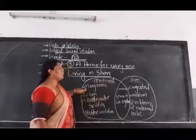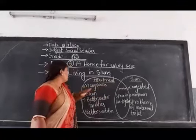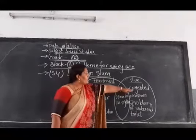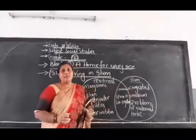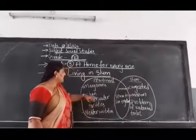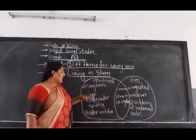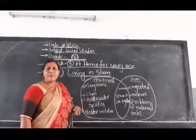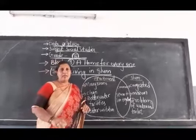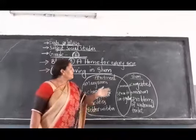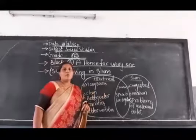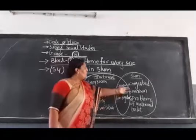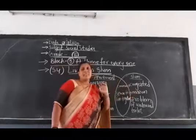Let us read now. First point: many rooms are there in apartments. What about in slum? It is very congested. Second point: apartments are very clean. Why? Because a sweeper will come and sweep, and we pay maintenance for apartments. What about in slum? No one is there to clean. Everyone will go for work there, and they are very poor people. So only one room is there for everyone.